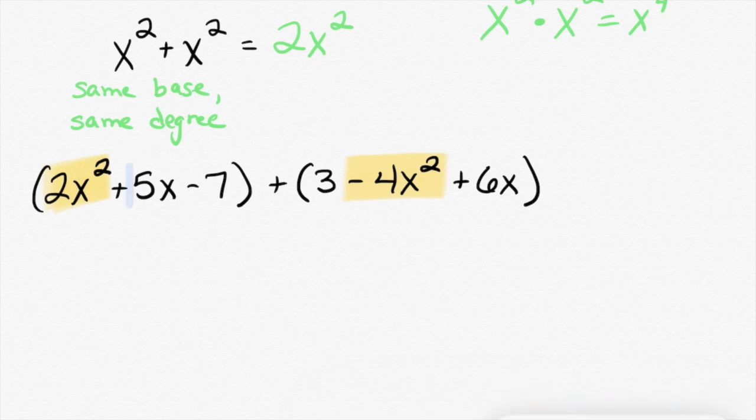I have a 5x. That has a base of... A base of... The base is... Five. x is the base. And the degree is... One. Do I have anything else in this problem with a base of x and the degree of one? The 6x. Very good.